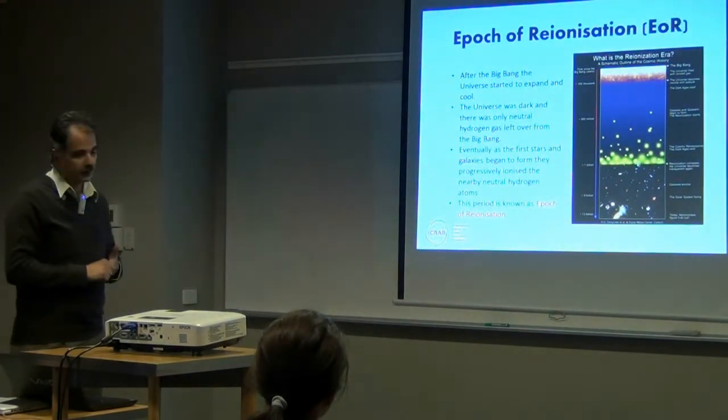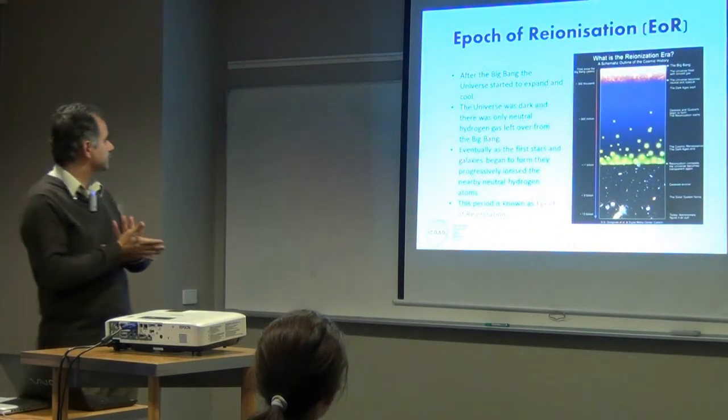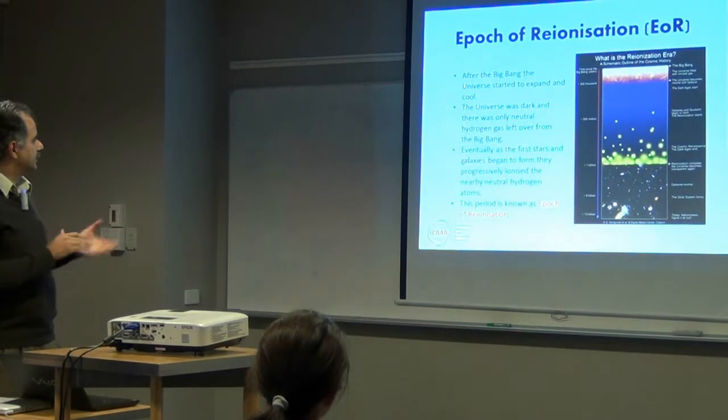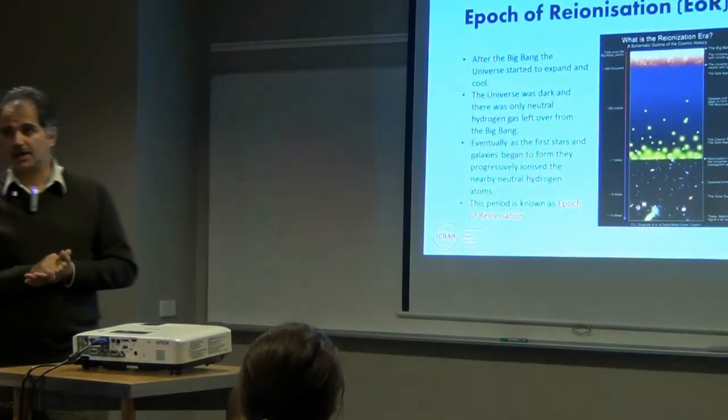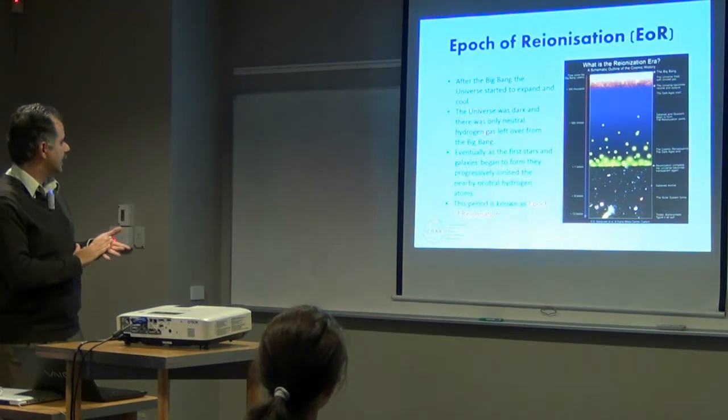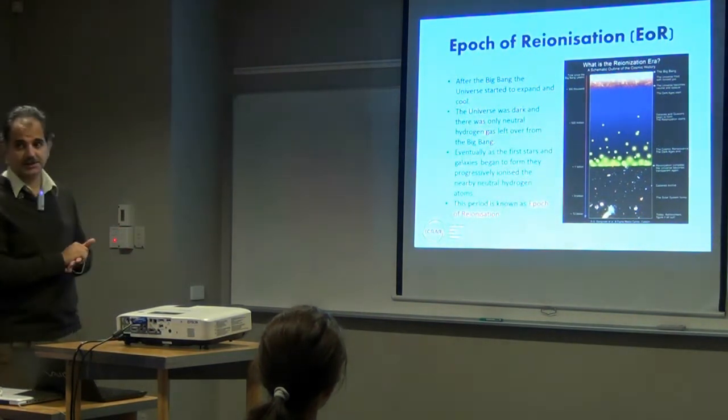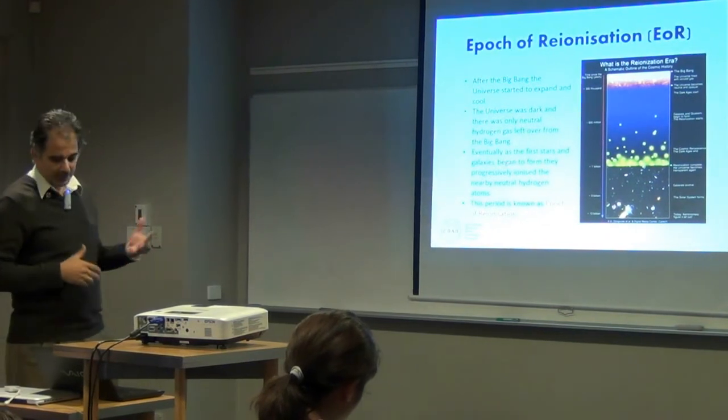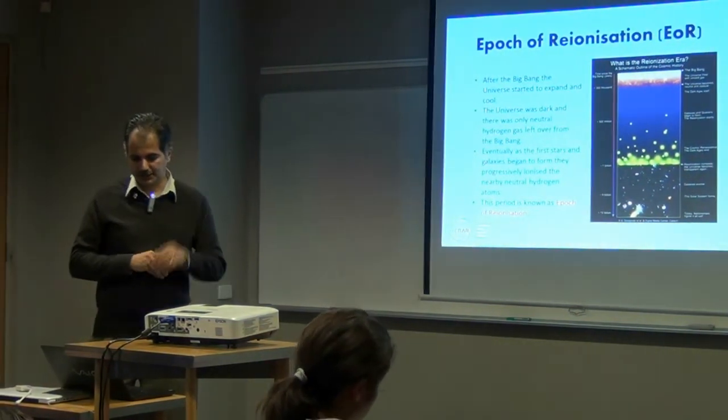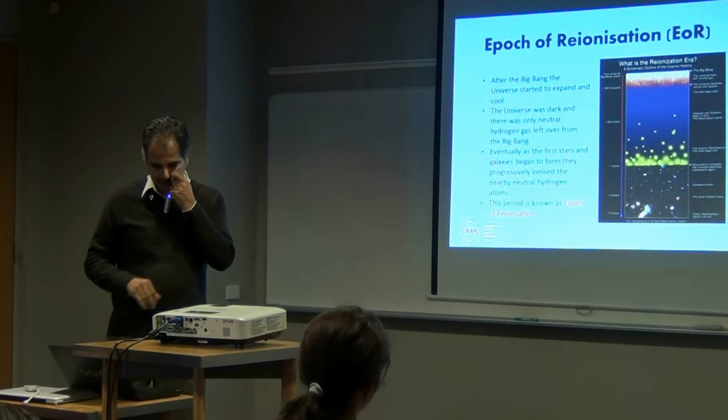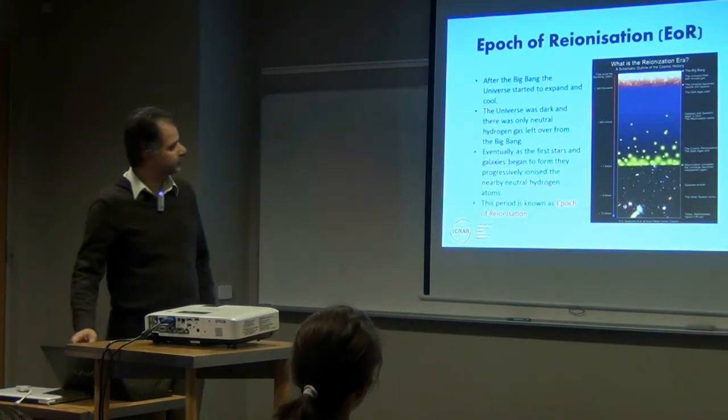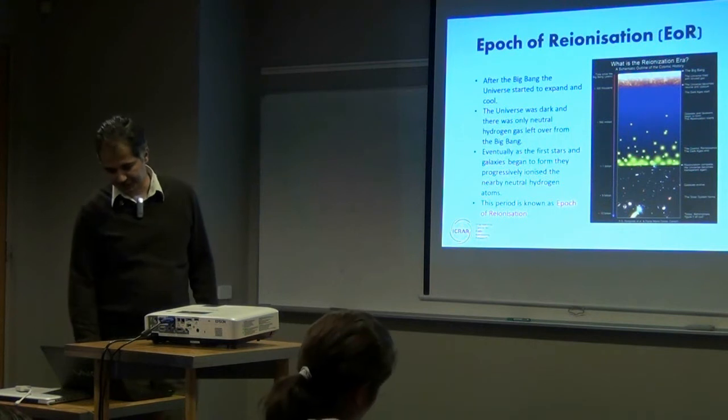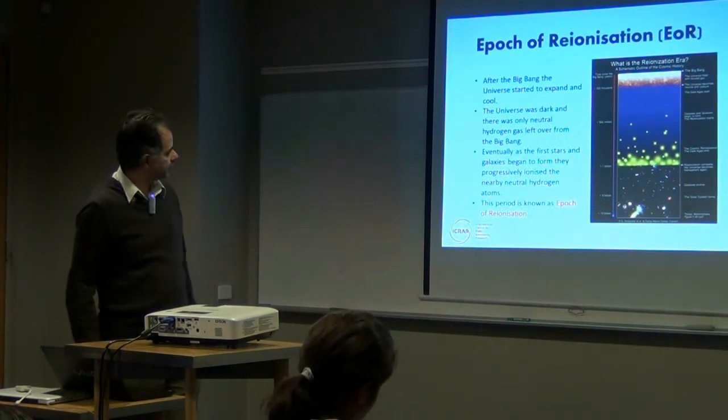We know that after the Big Bang the universe was dark and it was expanding and we were only left with neutral hydrogen. And when the stars started to form progressively the neutral hydrogen was ionized. And that era which is about a billion years after the Big Bang, that's called the epoch of ionization.